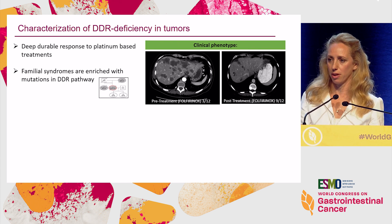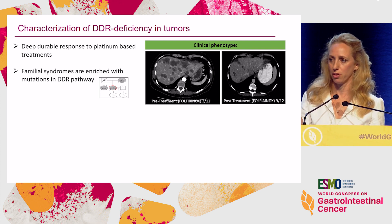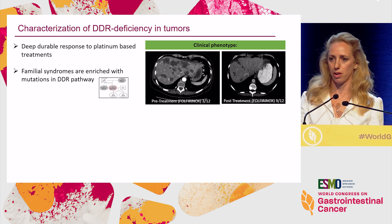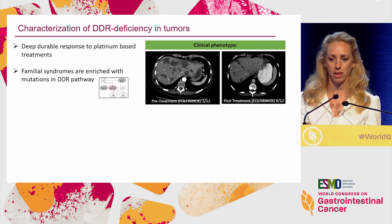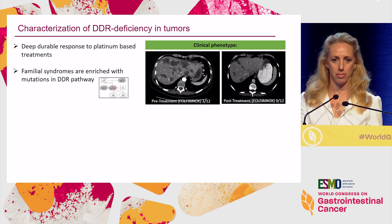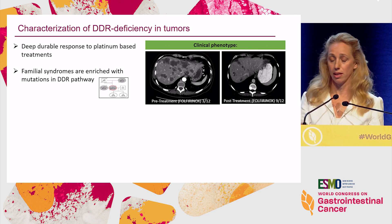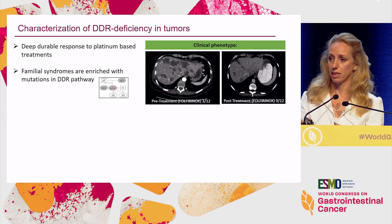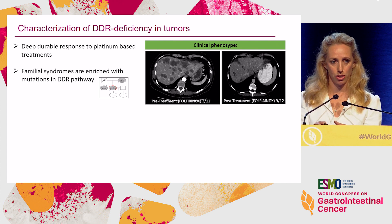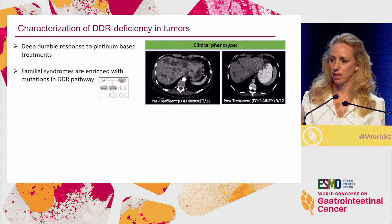Let's think about how we can characterize DNA damage repair deficient tumors in GI. We can consider the clinical phenotype: we see patients who have a deeper, more durable response to platinum-based treatments — we'd look at these as outlier patients. In some of these patients, we also see that they aggregate with familial syndromes, with additional family members having cancer-related tumors as well, and in some of those families we can find specific mutations. We know that in many familial syndromes, there's an aggregation of DNA repair alterations.